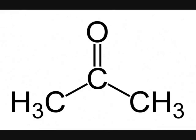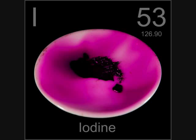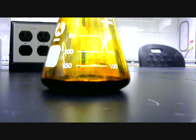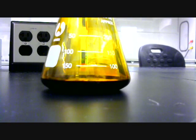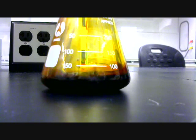The methylketone used in this reaction is acetone, found in nail polish remover. Because it's slightly less nasty than the other halogens, I used iodine in this reaction. Here you see a concentrated solution of iodine and acetone, which gives it the brown color.